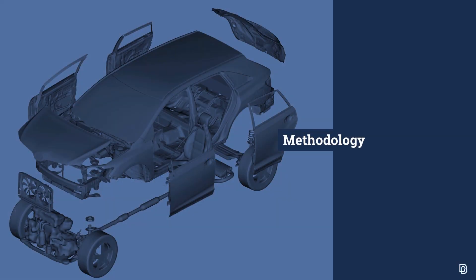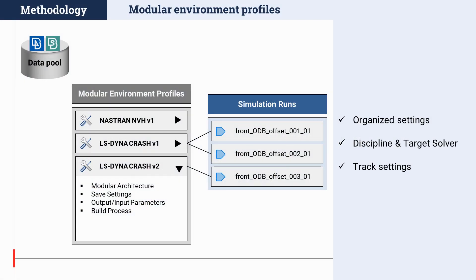ANSA version 21 also brings new developments in the methodology and processes of the modular environment, targeted at offering smart solutions for model composition. From now on, all settings that relate to the modular environment are collected under a new group in the ANSA settings window called the modular environment. All settings that relate to save and load parameters, the target model container architecture and file format, as well as the build process, make up a new entity named modular environment profile. Modular environment profiles are identified and stored based on two keys: the discipline and the target solver.